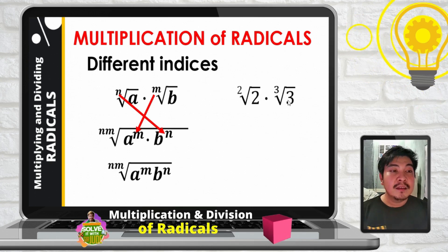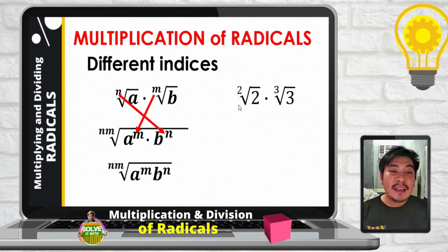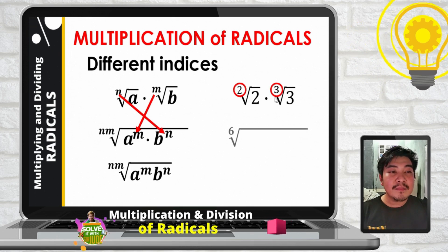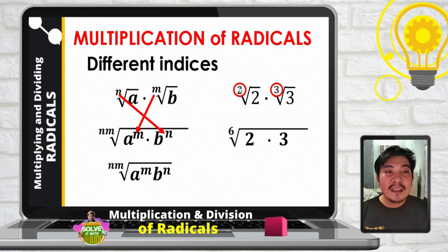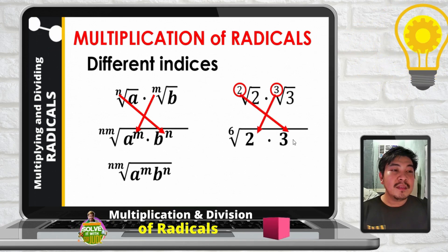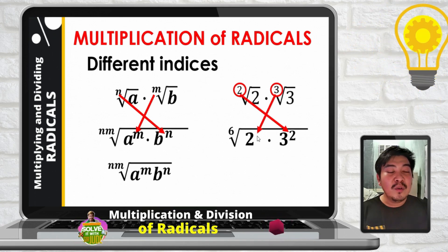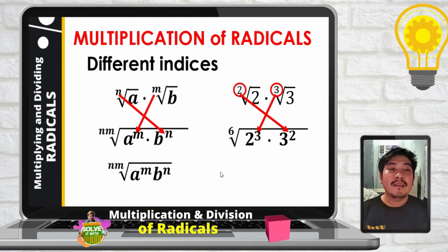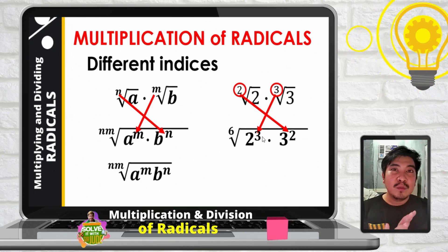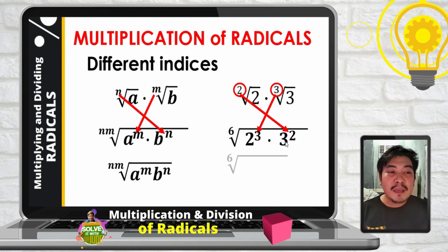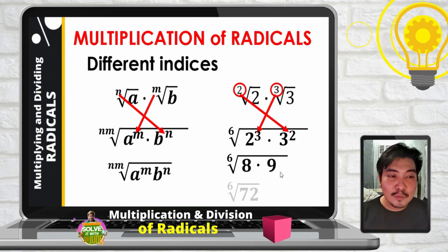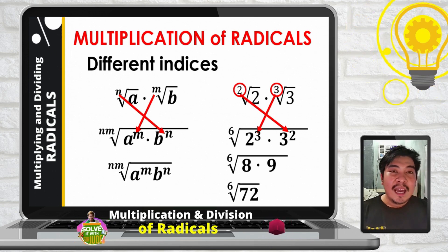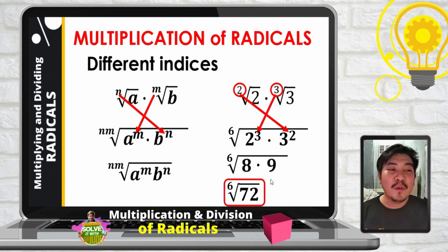Example: square root of 2 times cube root of 3. The square root of 2 has index 2, and cube root of 3 has index 3. Multiply the indices: 2 times 3 gives 6 as the new index. The index 2 becomes the exponent of 3, and the index 3 becomes the exponent of 2. So 2 cubed is 8 and 3 squared is 9. We now have the 6th root of 8 times 9, which is the 6th root of 72, and this is already in its simplest form.